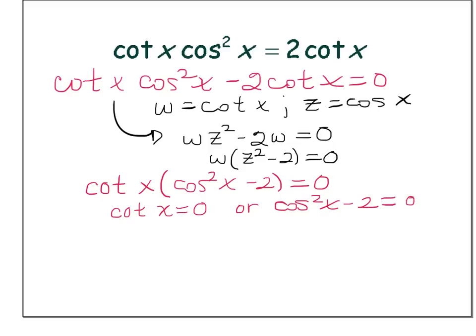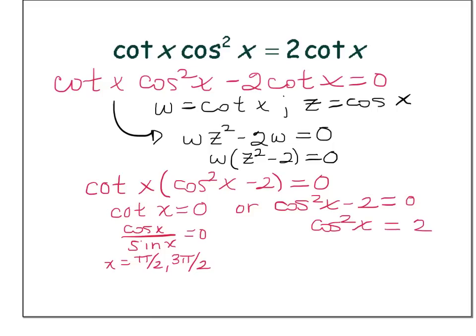For cotangent x equals zero, cosine over sine would have to equal zero, and that only happens when cosine is zero. From zero to two pi, that happens when x is pi over two or when x is three pi over two. For the other equation, cosine squared x minus two equals zero means cosine x would have to equal plus or minus the square root of two. There's nowhere on the unit circle where that occurs — the square root of two is approximately 1.41, and the maximum value of cosine is one. So that equation has no solution.